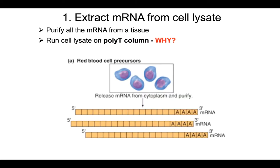So, how do we make cDNA? How do we make DNA that is complementary to messenger RNA — the DNA version of messenger RNA? Well, you first need the RNA. We need to get cells that we know express that gene and make that messenger RNA.